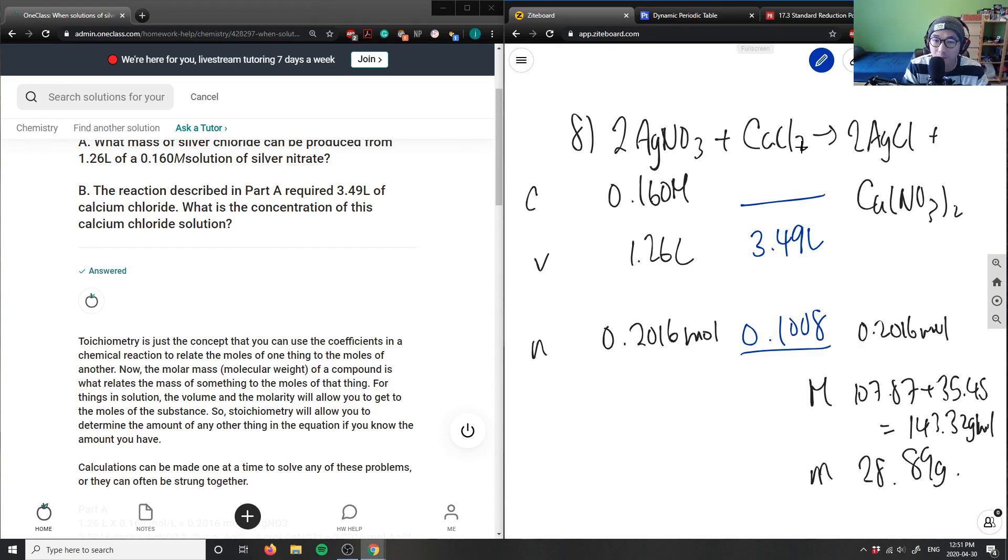So I'm gonna have 0.1008 divided by 3.49 to get my concentration of my calcium chloride which is 0.0289, 0.0289 molarity here.